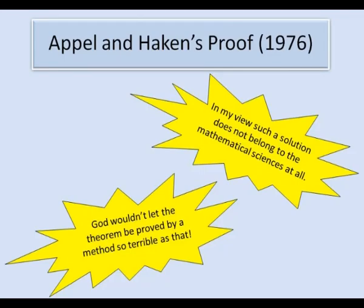So the reaction from some mathematicians to the proof by Appel and Haken was not excitement at the solution to a long-standing problem but rather horror. They said things like, in my view such a solution does not belong to the mathematical sciences at all, or God wouldn't let the theorem be proved by a method as terrible as that.